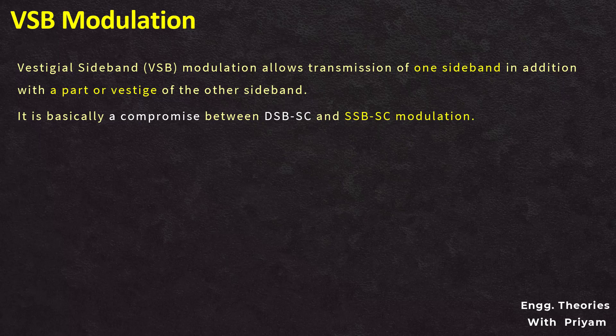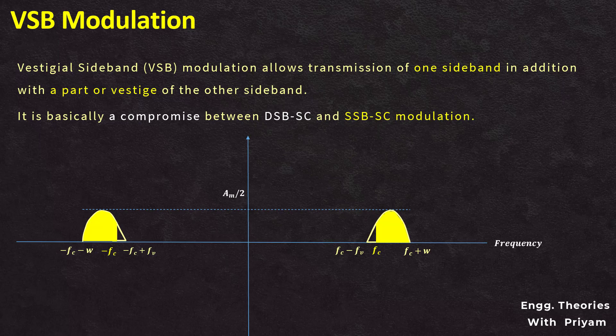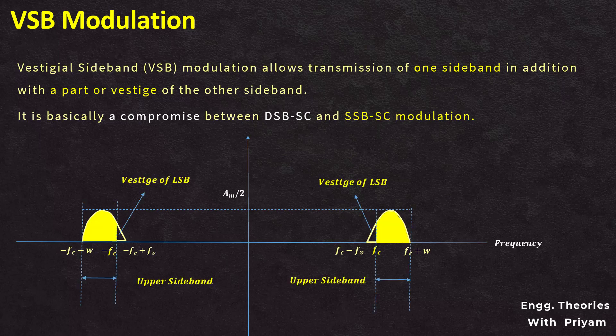In traditional amplitude modulation, the modulating signal is used to modulate both upper and lower sidebands symmetrically around the carrier frequency. However, in VSB modulation one sideband is significantly attenuated or vestigial while the other sideband is preserved. This allows for more efficient use of available bandwidth. The VSB technique was introduced to overcome the drawbacks of SSB modulation, as SSB modulation requires accurate frequency response of the filter.